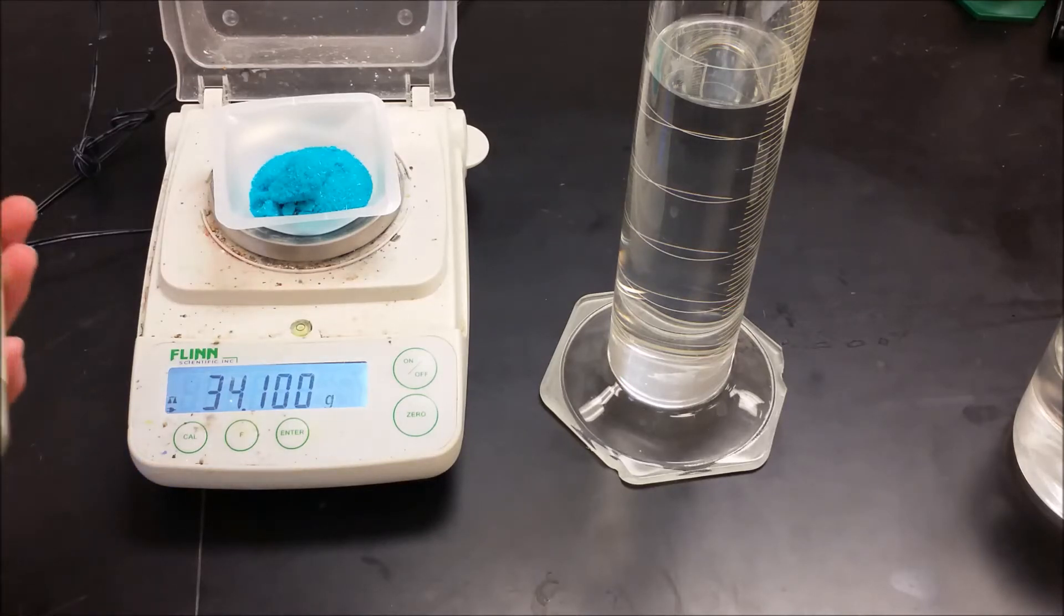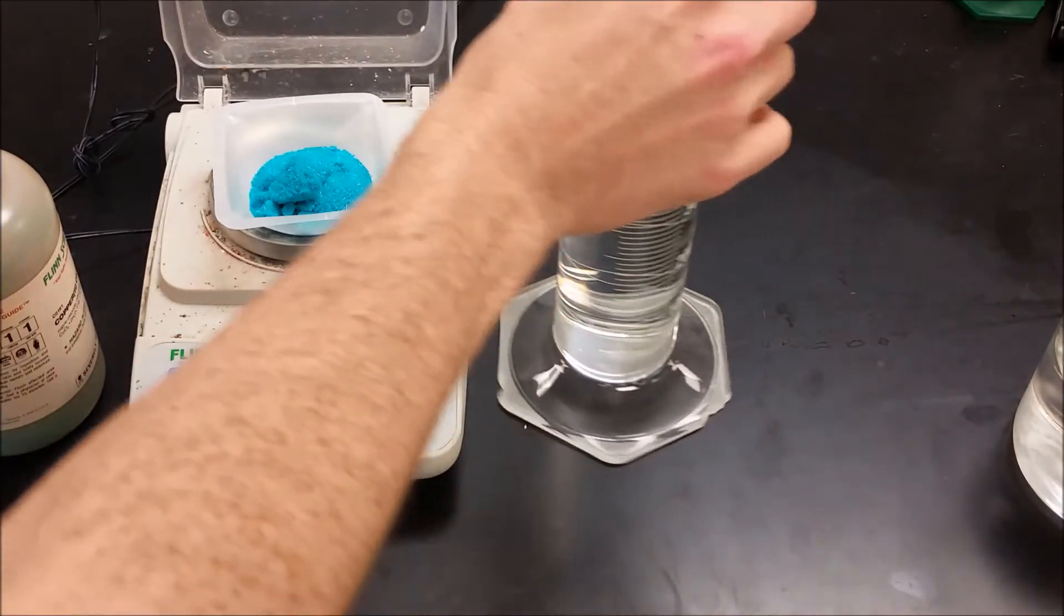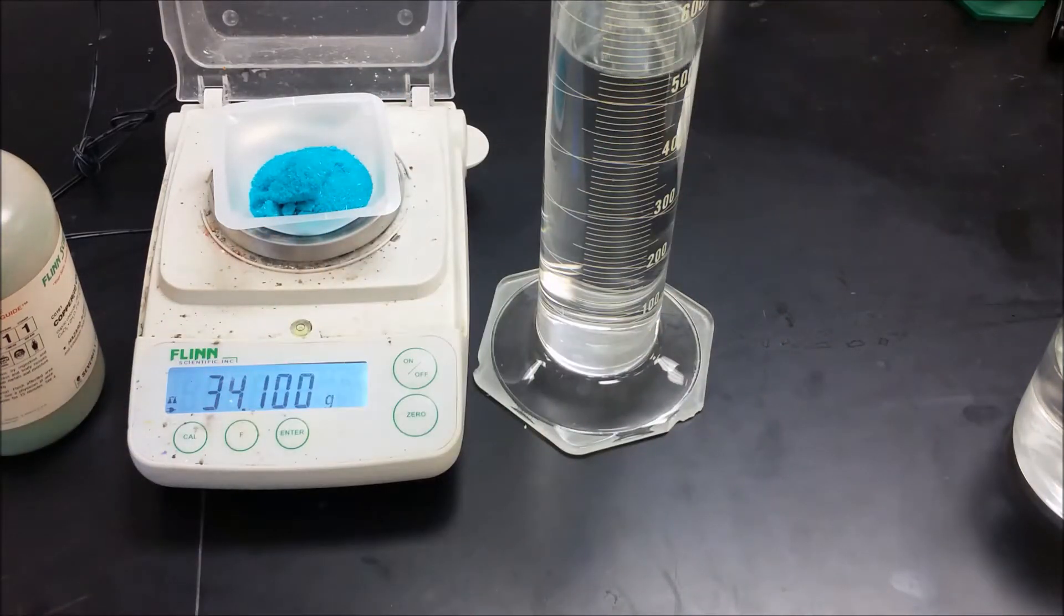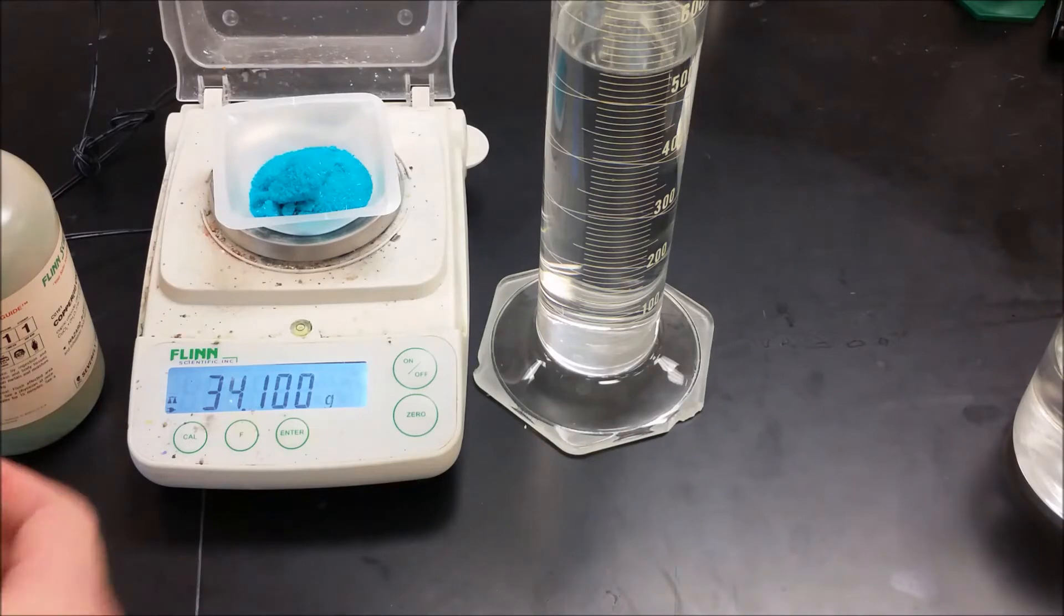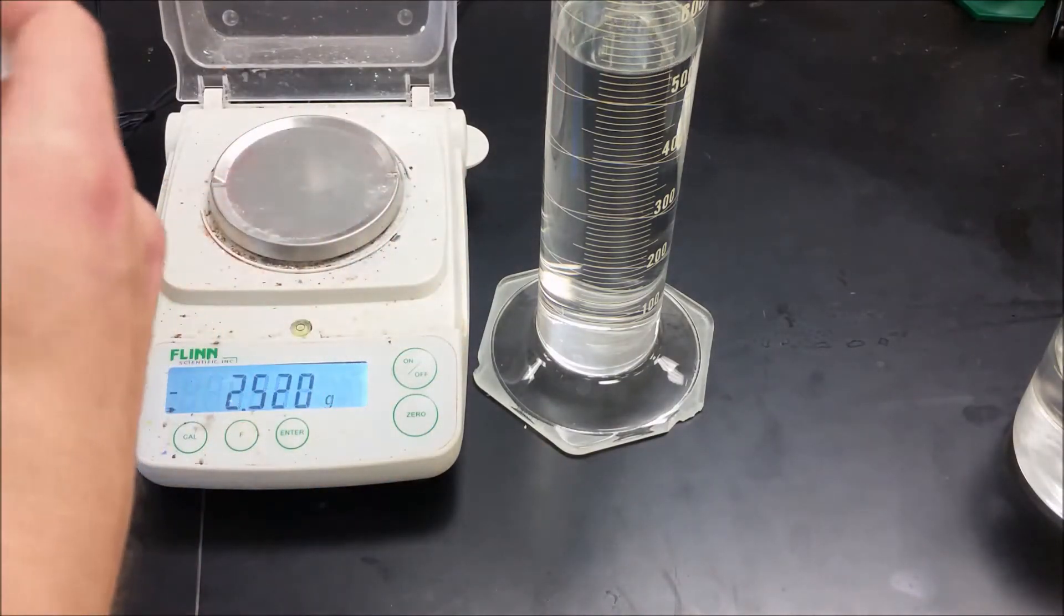Here I have 34.100 grams of copper chloride, it's a dihydrate, and I'm going to take that and dissolve it in about a liter of water and end up making one liter of solution total.